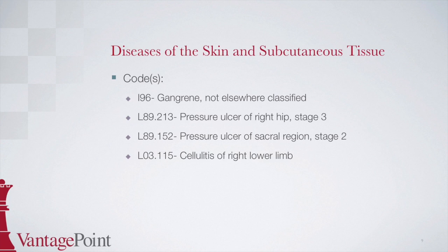From there, find stage 3 and then the site, which is the hip. This points to L89.2 with a checkbox indicating more digits are required. In the tabular, subcategory L89.2 is for pressure ulcer of the hip, so we still need to find the right hip as well as stage 3. The subcategory for right hip is L89.21, then we need a 6th character of 3 as the ulcer is stage 3, giving us a final code of L89.213. The next code is L89.152, pressure ulcer of sacral region, stage 2. Start at ulcer in the alphabetic index, then find pressure indented below.